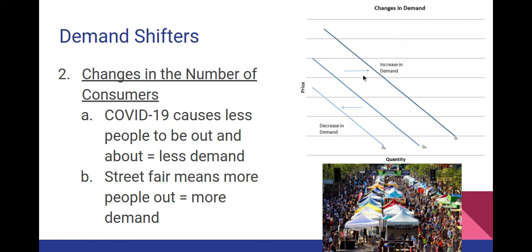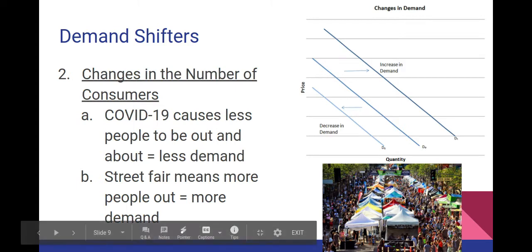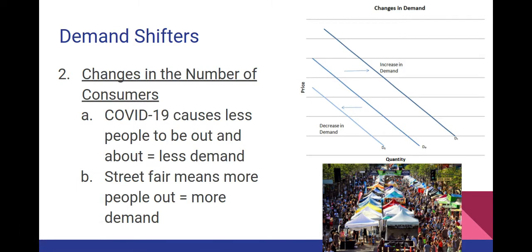The opposite — where demand shifts to the right, meaning an increase — might be a situation like a street fair. The Fargo street fair, for example, lasts about a week and shuts down downtown Fargo to traffic. There are businesses set up in tents all over the place. Naturally, you have much more foot traffic in the area, which means much more demand, because people who would normally never be in front of your store end up buying things they think they need right there in the moment.